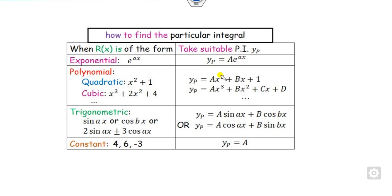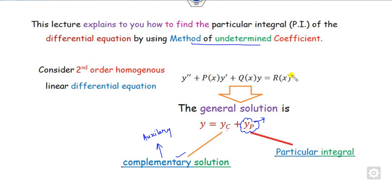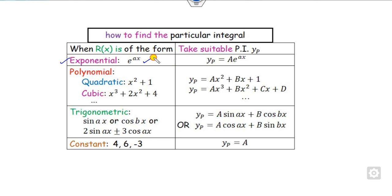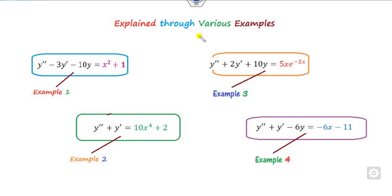How you find the particular integral depends on whether r(x), the right-hand side of the differential equation, is in exponential form, quadratic form, trigonometric form, or constant. This part we already discussed in our last lecture. Now in this case we will see all those cases where the right-hand side is a polynomial — either quadratic, cubic, bi-quadratic, and so on.